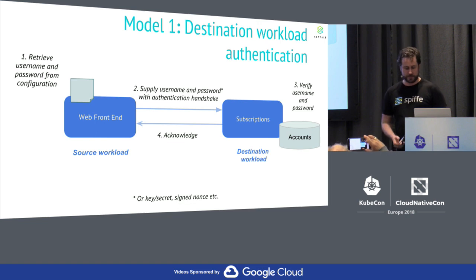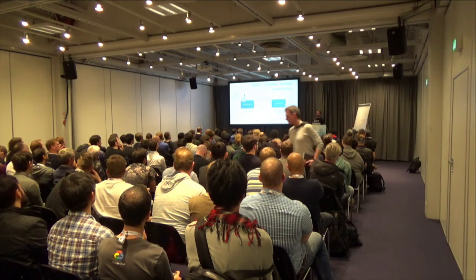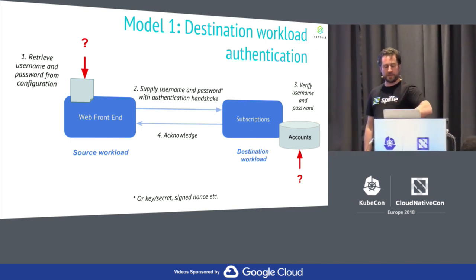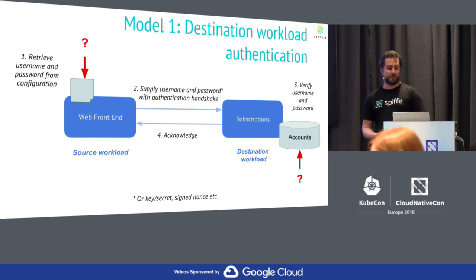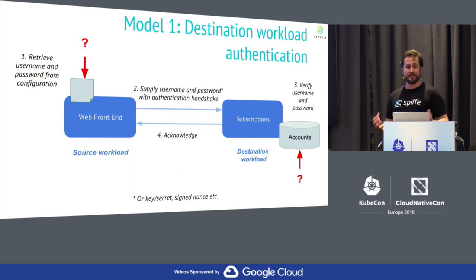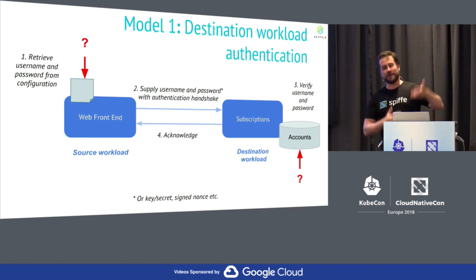There are a couple of problems with this model. It doesn't lend itself well to automation. Creating these accounts is different for every system because each has a different auth model. You then need to distribute these secrets over to the source workload. You need a robust distribution system. You also need to figure out how to rotate these things. There are a number of secret stores that do a great job of maintaining secret credentials and can dynamically create and rotate accounts. But even with secret stores, you have the secure introduction problem — how does your workload actually connect to the secret store in the first place to authenticate itself?